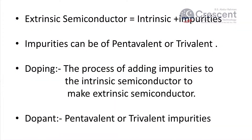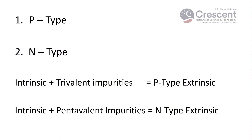Let us now discuss about extrinsic semiconductors. Extrinsic semiconductors are the impure form of semiconductors, usually formed from intrinsic semiconductors by adding impurities. The impurities added to make extrinsic semiconductors are called dopants, and the process of adding them is called doping. There are two types of extrinsic semiconductors: p-type, using trivalent impurities, and n-type, using pentavalent impurities.